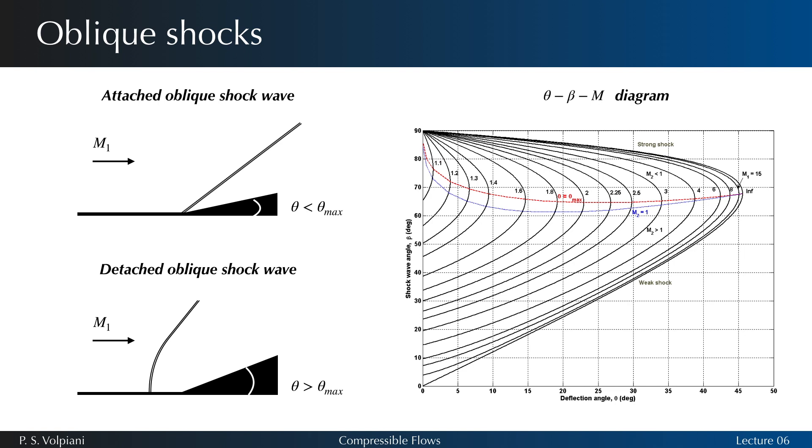Note that the theta, beta and M1 relationship relates two beta angles for a given value of theta and M1. The larger angle is called the strong shock and the smaller angle the weak shock. The weak shock is almost always seen experimentally.